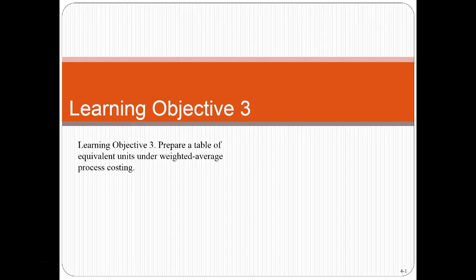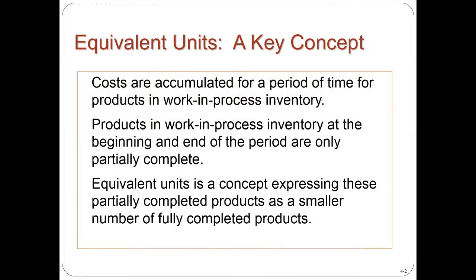Hello, this is Bob Steele. In this video, we will continue on Chapter 4, Learning Objective 3, which is to prepare a table of equivalent units under the weighted average process costing system. So equivalent units is a key concept, and that's what we're going to talk about first.